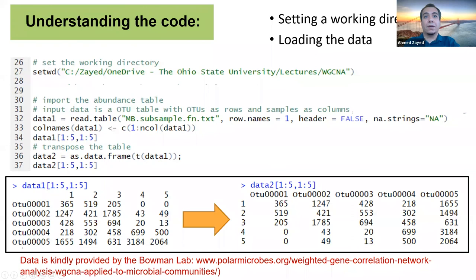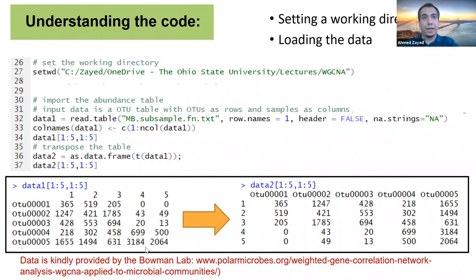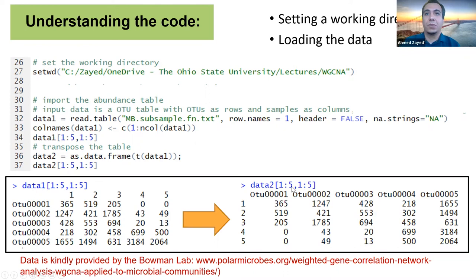The code is actually modified from the Grady et al. paper published in Nature in 2016, with some elements also adopted from the code the Bowman lab has shared. Line 32 is basically reading the table — this table should have your OTUs as rows and your samples as columns, with numbers representing their abundance in the system, i.e., counts from 16S sequencing. The first thing you do is transpose this data because you want to have your OTUs as columns and your samples as rows. That's pretty straightforward.